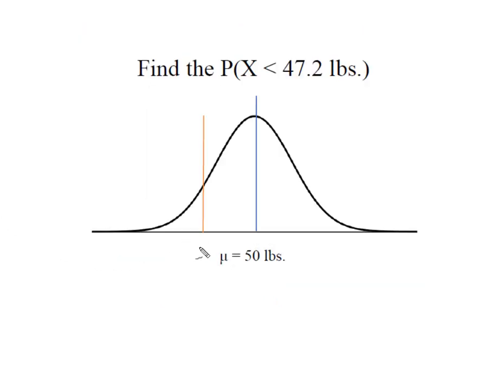We recall that here was our x of 47.2 pounds. We were looking for this area here. What the normal distribution table told us was that 32.38% fell between my value of x and the mean of the distribution.